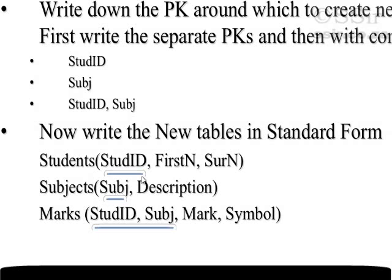The second primary key is subject. I've called its table 'subjects', and only description is dependent on subject — the primary key must be underlined. In the third table, both student ID and subject must be underlined. I've called this table 'marks', and the two fields dependent on both of them are mark and symbol.